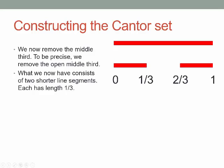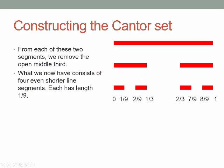Can you guess what we do next? We're going to remove the middle third from each of those. On the left, we had the segment from 0 to 1/3, and we take away the middle of that — all the points between 1/9 and 2/9. Over on the right, we had the segment from 2/3 to 1; we take out its middle third, which goes from 7/9 to 8/9. Again, we're taking out the open middle thirds, so we always leave the endpoints. Having done that, we now have 4 line segments — a union of 4 closed line segments.